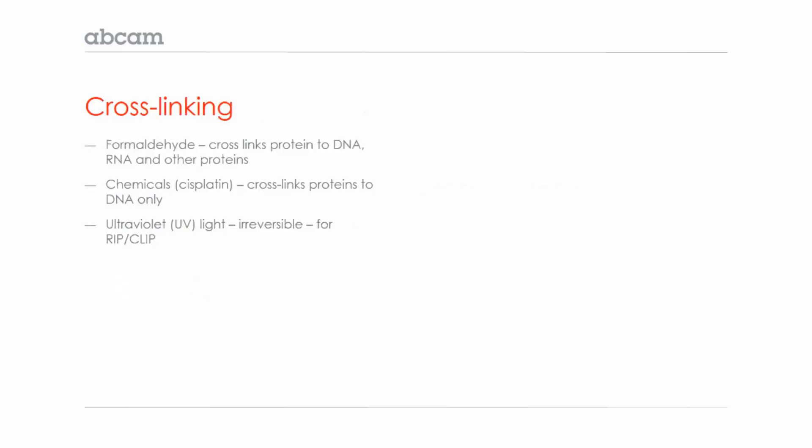The first step in cross-linking ChIP is to cross-link the DNA to proteins. Most commonly, this is done with formaldehyde, which cross-links protein to DNA, RNA, and other proteins.